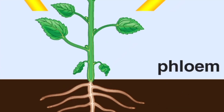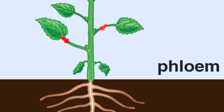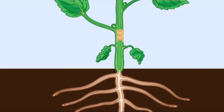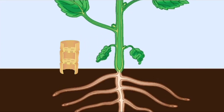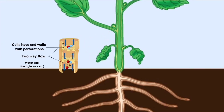Phloem, in contrast, transports the products of photosynthesis — like glucose — from the leaves to other parts of the plant. This transport relies on pressure differences between the source, where glucose is produced, and the sink, where it is used or stored.